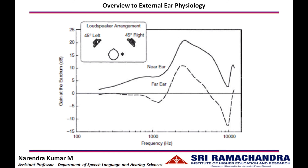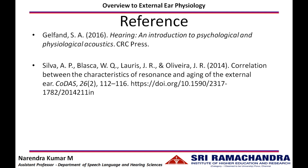The head-related transfer function can vary depending upon the sound source. For example, with two loudspeakers on the right and left sides, when the right loudspeaker generates sound, the closer right ear has a head-related transfer function that receives sound at a higher energy level, whereas the further left ear receives similar sound but at lower levels. This difference in energy level between the two ears helps us localize the sound in the horizontal plane. Thus, resonance contributes to sound localization.